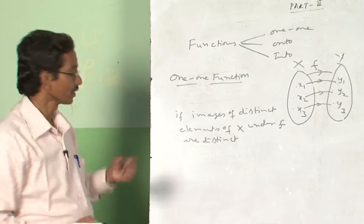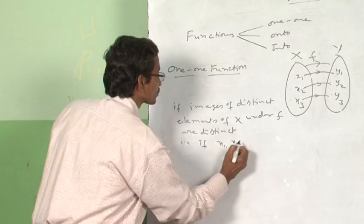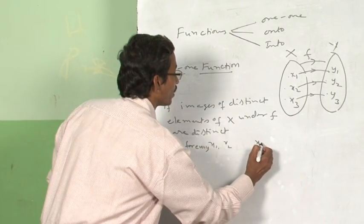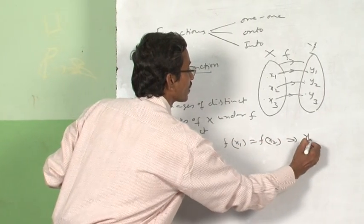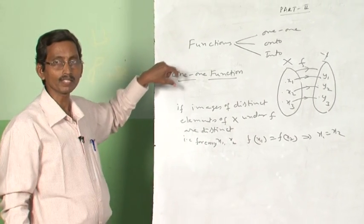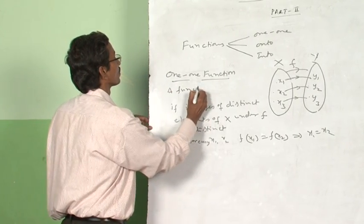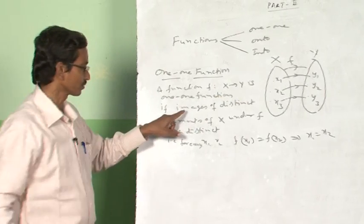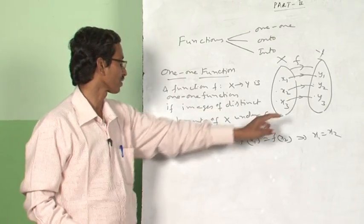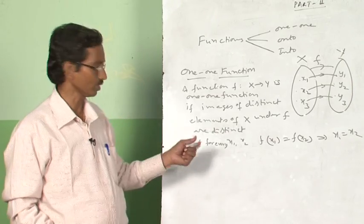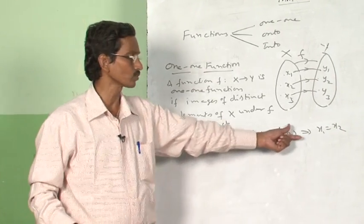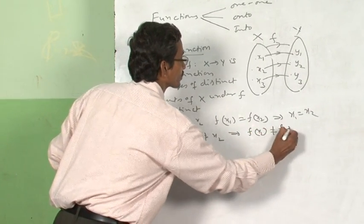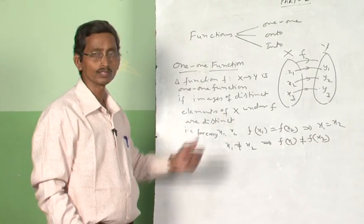That means: for every X1, X2, if f(X1) is equal to f(X2), this implies X1 is equal to X2. Or equivalently, if X1 is not equal to X2, then f(X1) is not equal to f(X2). Either condition is sufficient to say that the function is a one-one function.